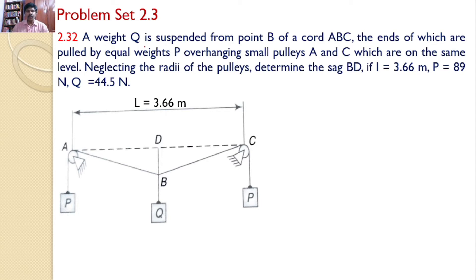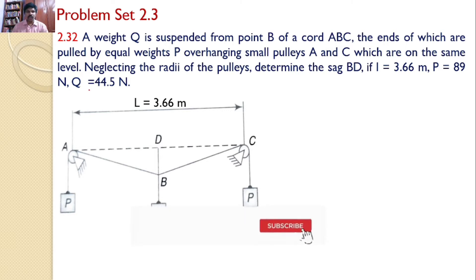A weight Q is suspended from point B of chord A, B, C, the ends of which are pulled by equal weights P overhanging small pulleys A and C which are on the same level. Neglecting the radii of the pulleys, determine the sag BD if L is equal to 3.66 m, P is equal to 89 Newtons, and Q is equal to 44.5 Newtons.